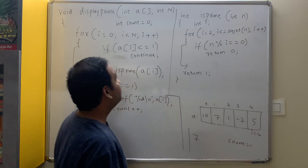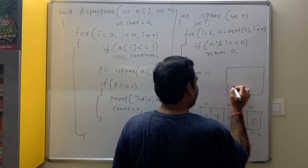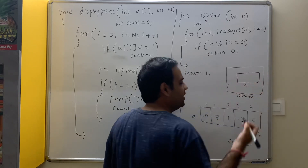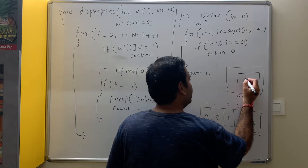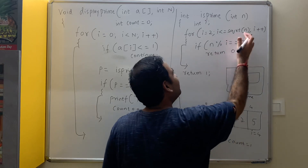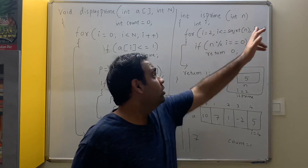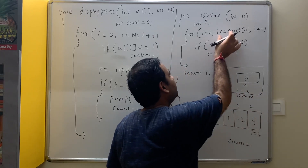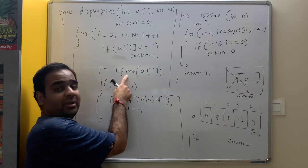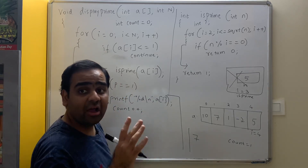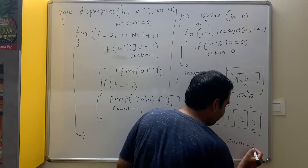i becomes 4, and a[4] is 5. 5 <= 1 is false, so we call is_prime(5). Inside is_prime, i starts at 2, sqrt(5) is about 2.24 — take it as 2. 2 <= 2 is true. 5 % 2 is not 0, so i becomes 3. 3 <= 2 is false, so we exit and return 1. The scope of is_prime is deactivated, p becomes 1, and 1 == 1 is true. We display a[4] which is 5 and say count++. The value of count becomes 2.